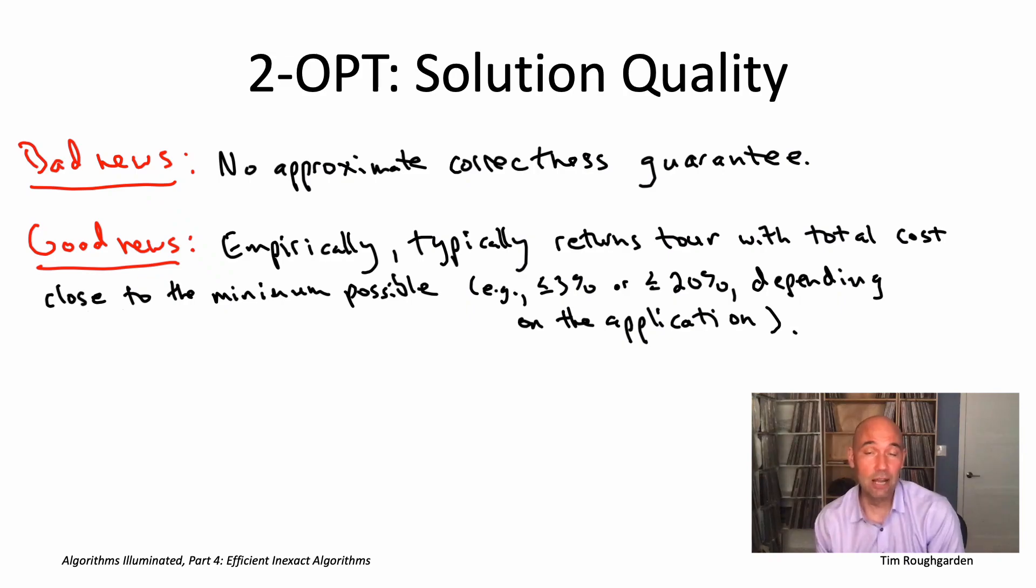And indeed, when someone from industry asks me for help on a problem that looks more or less like the TSP, I'll usually recommend to them that they start with the two-opt heuristic augmented with some of the bells and whistles that we'll talk about in the next video. So if you find yourself having to tackle a TSP-type problem in one of your own projects, this is an excellent starting point. In the next video, let's move on to zooming out, and I'll show you how this two-opt heuristic exemplifies the principles of local search. See you then.